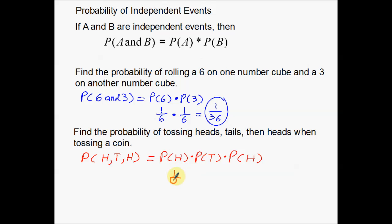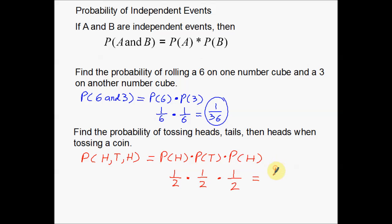The probability of tossing heads on a coin is one out of every two. The probability of tossing tails is one out of two, and the probability of tossing heads again is one out of two. We're treating all of these as independent events — they have nothing to do with one another. So one-half times one-half times one-half: multiply that all together and you get one out of eight. The probability of tossing heads, tails, heads is simply one out of eight.